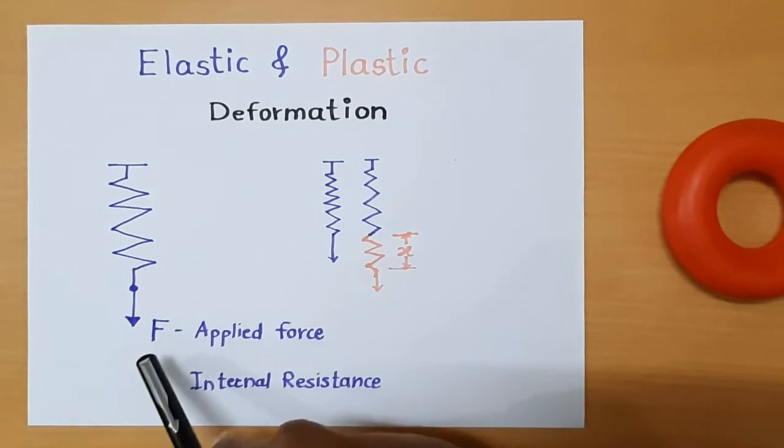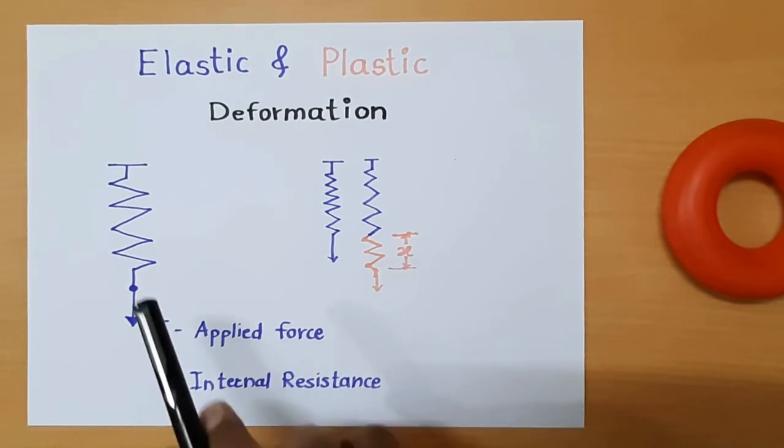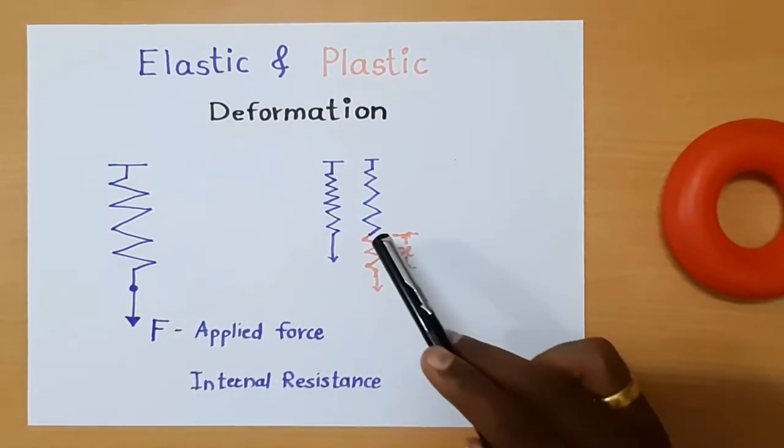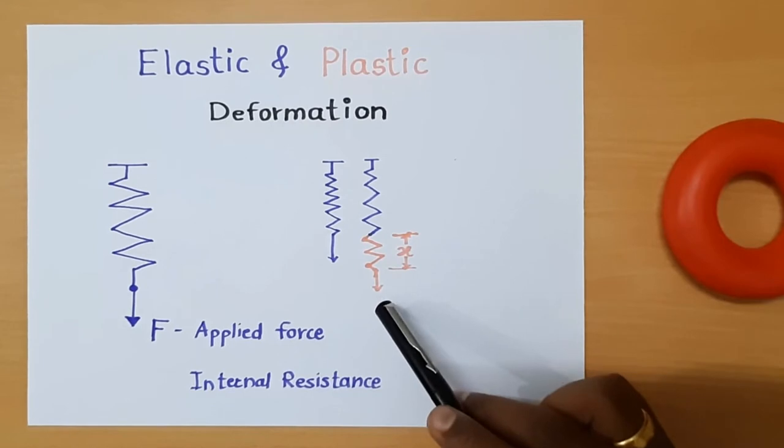Here if you see, this is the spring which is attached to the top, and the force is applied at the bottom. What will happen when we apply the force? This spring will try to deform in the direction of the force.